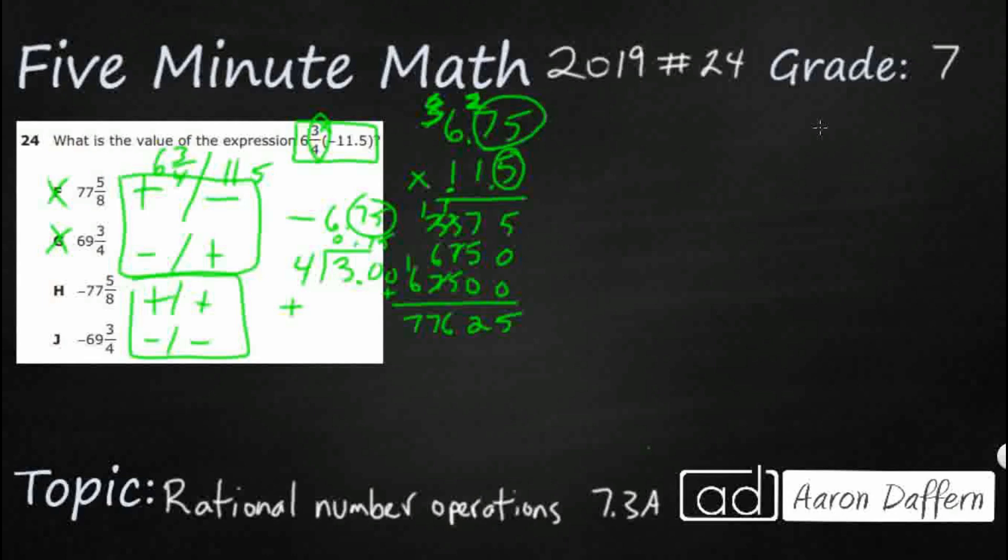But remember, I've got 1, 2, 3 digits behind the decimal in my factors. So I need 1, 2, 3 digits behind the decimal in my product: 77.625. Remember, it was a negative 11.5, so that's actually negative 77.625.